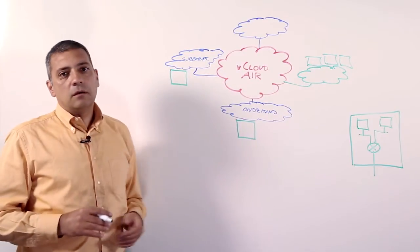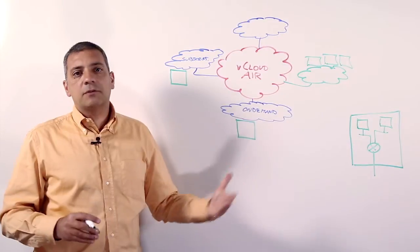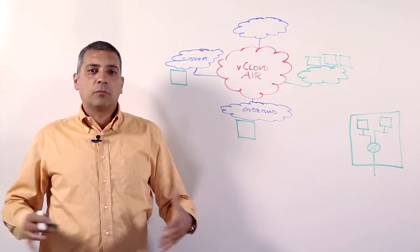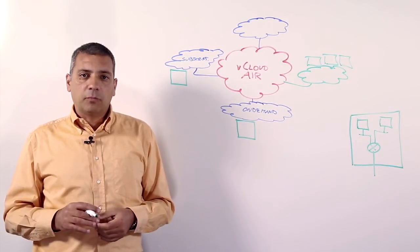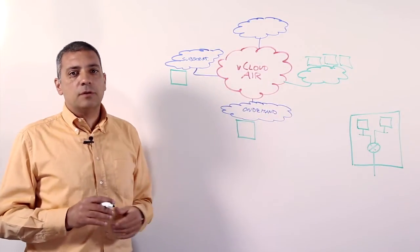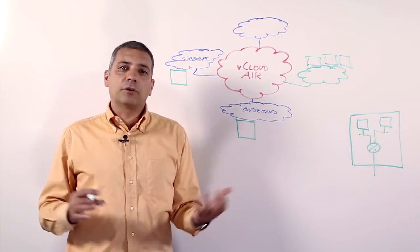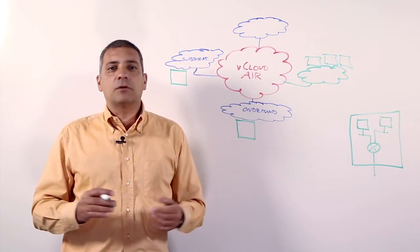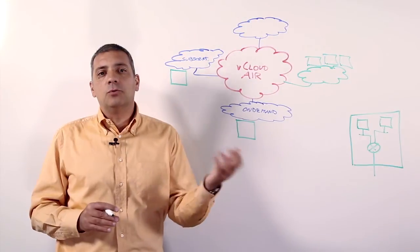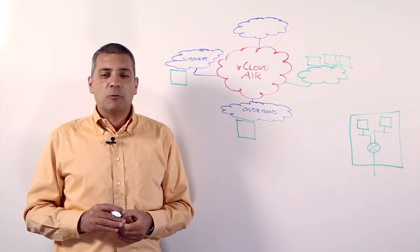So what we have seen in these few minutes is the concept of the cloud of clouds and how we use a distributed vCloud Director footprint, the commercial models associated to those instances, as well as a breakdown on what a virtual data center is, which is essentially the atomic unit that you use to consume the compute service in vCloud Air. Thanks for watching.